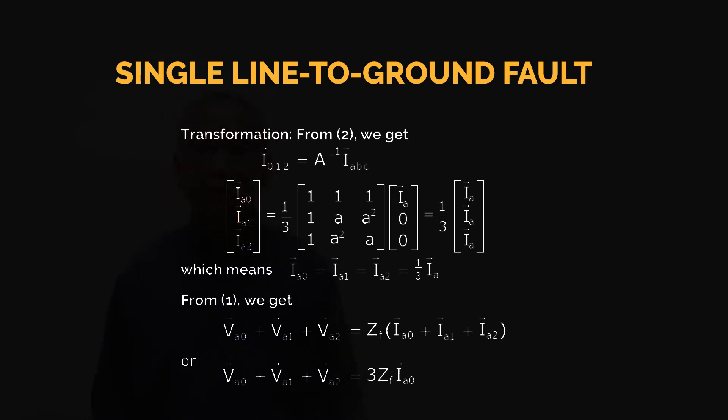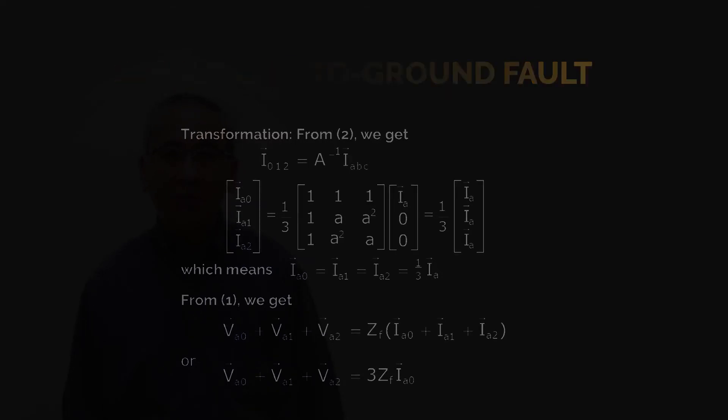From that equation, the first equation, VA equal to ZF multiplied by IA, we can get now VA0 plus VA1 plus VA2, which is the sequence components of the voltage VA, equal to ZF multiplied by IA0 plus IA1 plus IA2. Or, we can have VA0 plus VA1 plus VA2 equal to three times the value of the fault impedance times the zero-sequence current IA0.